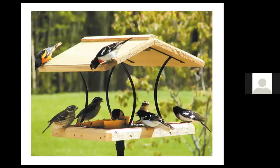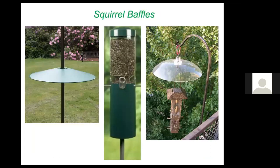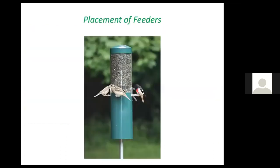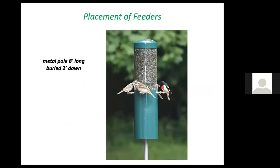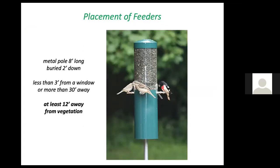If you have an open feeder, you will need to clean it often because birds will soil that platform, and squirrels will eagerly help themselves to seeds unless you bar them. Consider using a metal pole — harder for predators to climb. If it's eight feet long and buried two feet down, it sits at six feet off the ground. Here's the 3-30 rule: your feeder should either be less than three feet from a window or more than 30 feet away. The danger zone of three to 30 feet is because a startled bird might slam into a window. Place feeders at least 12 feet from vegetation, where predators can lurk and pounce on feeding birds.